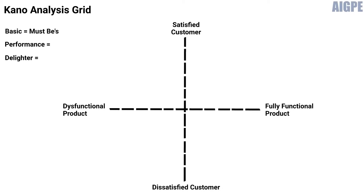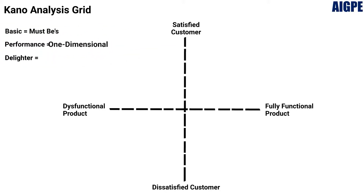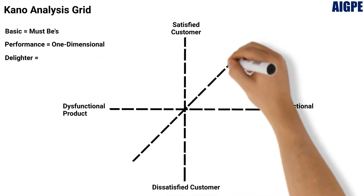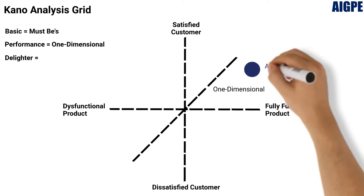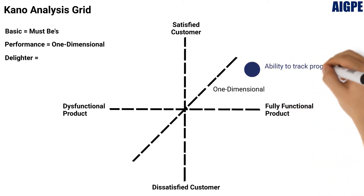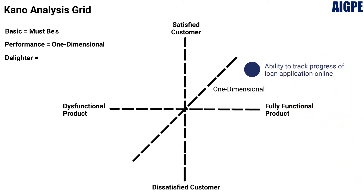Now, let us observe the performance requirement. This requirement is also designated as one-dimensional customer requirement. For example, in the IMF bank, allowing the customer to track which stage of the loan approval process their application is in is likely to be a one-dimensional customer requirement.